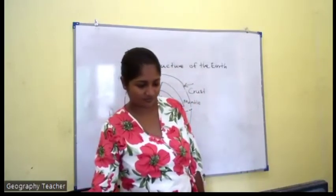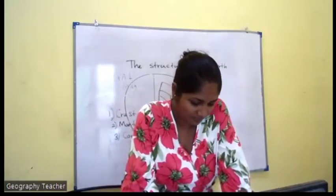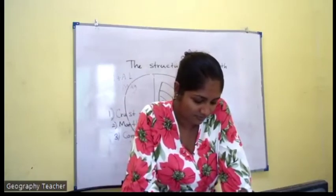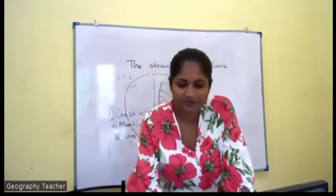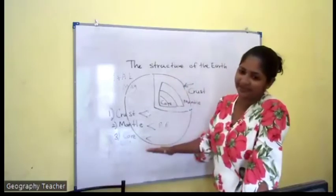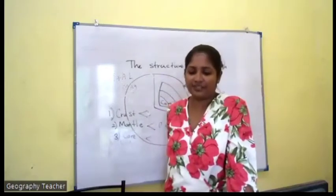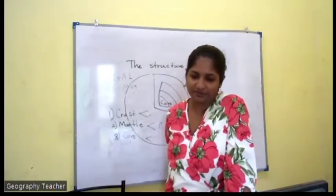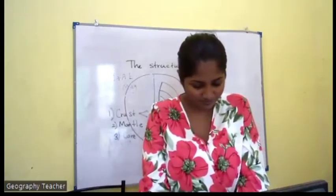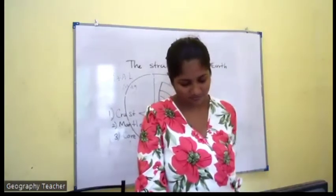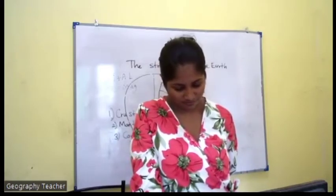According to the composition, the core is divided into two parts: inner core and outer core. The core is located below the mantle of the Earth. The outer core consists of liquid metal and it extends from the mantle to a depth of 2,250 kilometers.